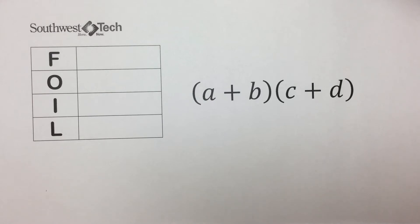It is often necessary to find the product of two binomials. The product can be found by using a method called FOIL, which is based on the distribution property.